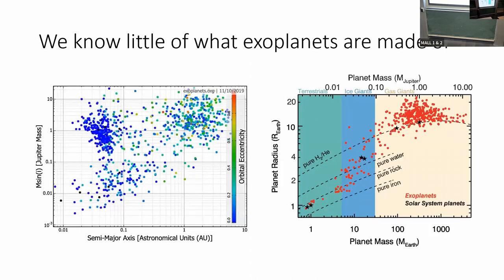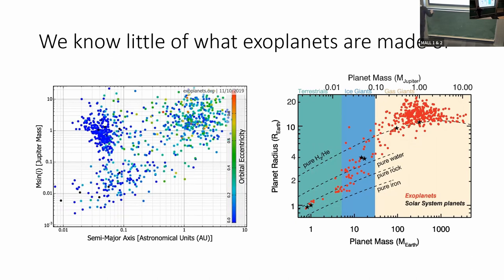Why might we care about studying these things? The thing that got me excited is that we basically don't know anything about the composition of exoplanets. We know that exoplanets are unlike the planets in the solar system. This plot shows the semi-major axis and mass of a bunch of known exoplanets. There are loads of exoplanets at small distances from their star — less than 1 AU — much closer than any planets in the solar system, and typically a few times the mass of the Earth.